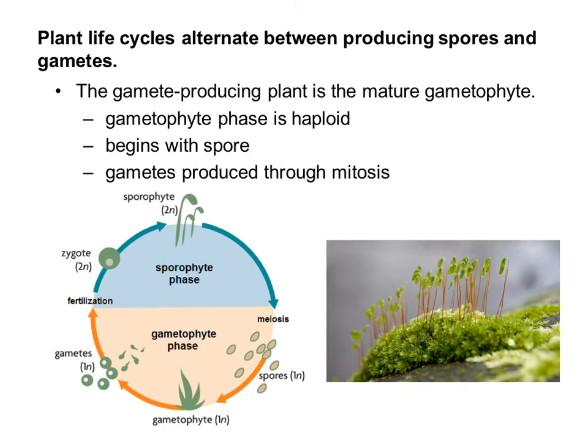The gamete-producing plant is known as a mature gametophyte, and the gametophyte phase is haploid. If you start from fertilization and move toward meiosis, you see the spores are haploid. They grow into the gametophyte, which produces gametes that are still haploid. So the gametophyte phase begins with spores and ends with gametes.